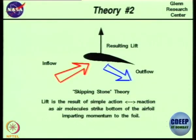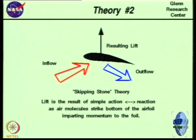Theory number two is called the skipping stone theory, also known as the bullet firing theory. As per this theory, the wing — shown here as a cross-section of the aerofoil — is basically an obstruction to oncoming flow. Air hits the bottom of the aerofoil, transfers its momentum, and by Newton's third law, that momentum is transferred back as a reaction force upward. Lift is the result of simple action-reaction: air molecules strike the bottom and impart an upward force.